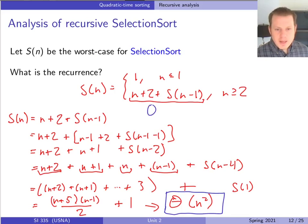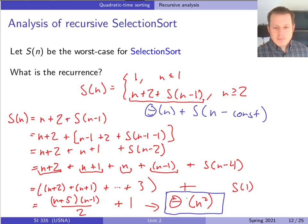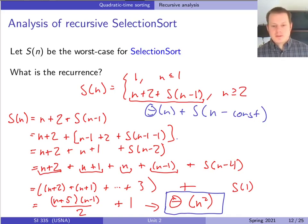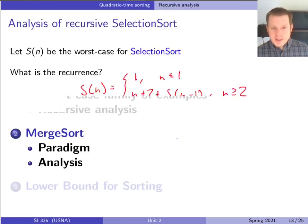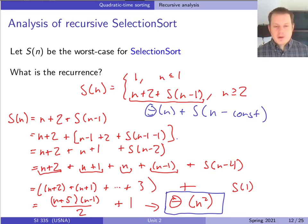The pattern to recognize for why it's big theta of n squared: we have a recurrence like big theta of n plus S(n minus a constant). We're only removing a constant amount of the input size but doing n amount of work to get there — that ends up being big theta of n squared every time. So that's it for today: we covered quadratic sorting algorithms, got some practice with summations, and reviewed how recurrence relations work.